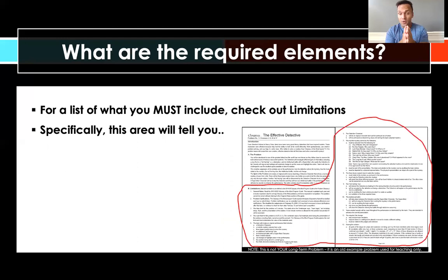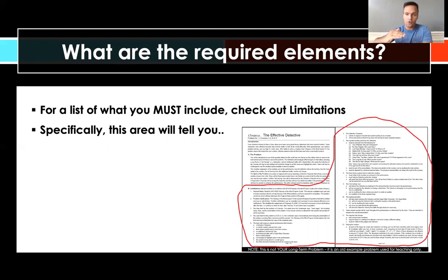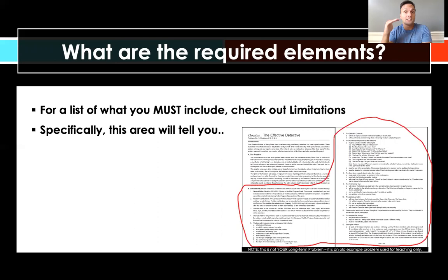Moving on, we have the required elements. The spirit of the problem gives you a short-form view of what's expected. Section B, the Limitations, outlines what's expected of the team point by point in list format, including qualifications or limits on what the team must do. For example, if a character must be presented, sometimes it must be played by a living team member, and sometimes a puppet is allowed. The limitations set those clarifications and expectations.